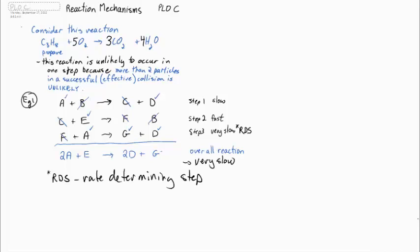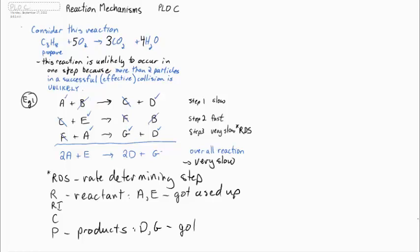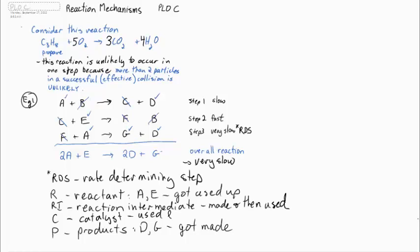We have reactants A and E, things that you've probably seen before, and we have products, things that get made. Reactants get used up, products get made. Reaction intermediates, those are things that are produced and then later on before it's over, consumed. The catalyst is used and then before the end it's remade again. Four different kinds of things.